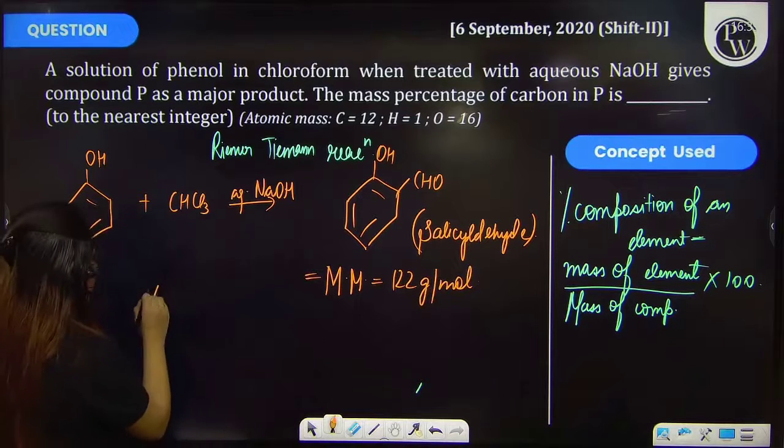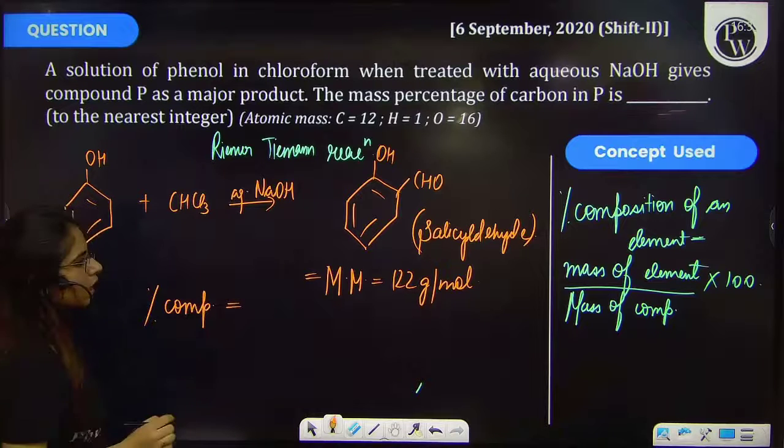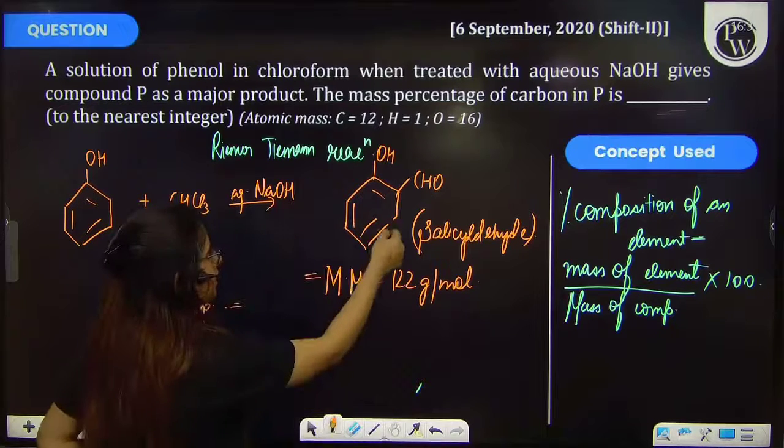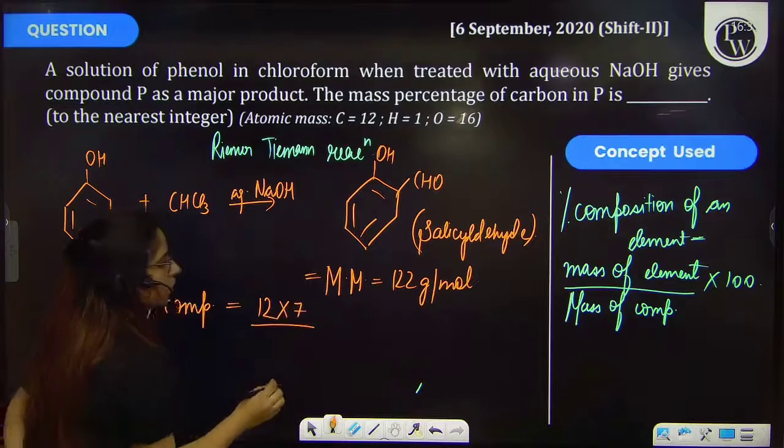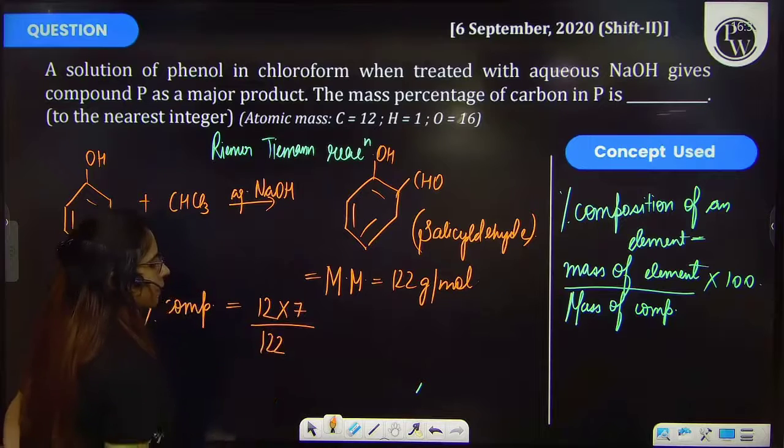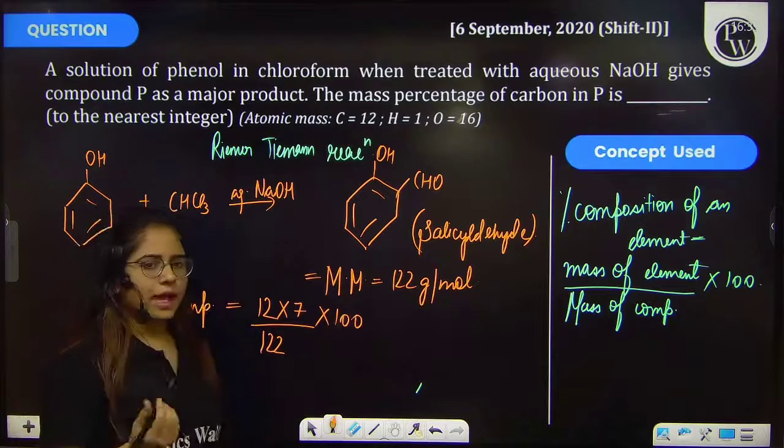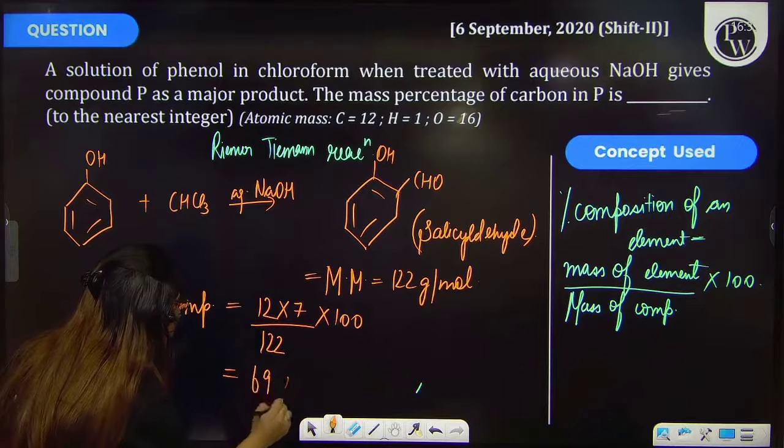Further, the percentage composition. In this compound, total number of carbon present are 7 carbons. That means 12 into 7 upon total mass of the compound, that means 122 into 100. So on calculating, you will get the value as 69%.